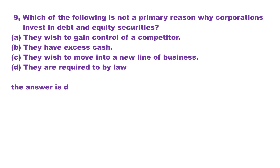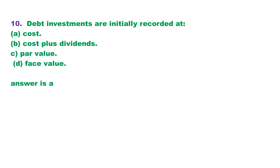Question 10. Debt investments are initially recorded at: A. Cost. B. Cost plus dividends. C. Par value. D. Face value. The answer is choice A.